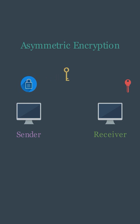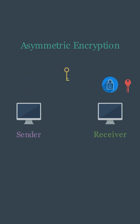Once encrypted, the file can only be decrypted using the private key, not the public key. Upon receiving the encrypted file, the receiver decrypts the file using the private key. Here, asymmetric means that different keys are being used for encryption and decryption.